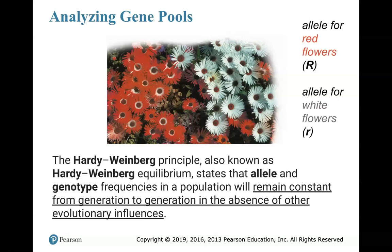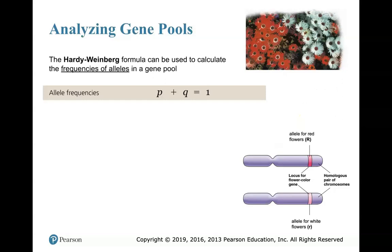Here I'm showing you an image of a gene pool — a population of flowers. In the gene pool, the allele for red flowers is shown with an uppercase R, and I have an allele for white flowers that's a lowercase r. Recall from our inheritance lectures that the red allele is dominant since it's uppercase, and white is the recessive lowercase r.